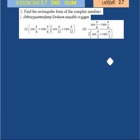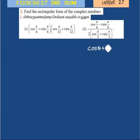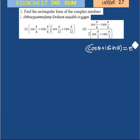It is easier to use Euler's formula: cos θ plus i sin θ equals e to the power i theta.